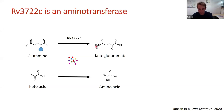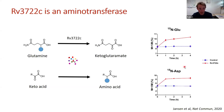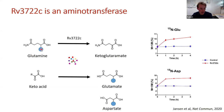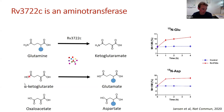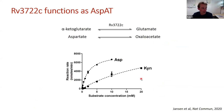We reasoned pool-size changes might be too small to detect, so we added an excess of 15N-labeled glutamine. This would push the reversible reaction forward and produce labeled amino acids that are easy to detect against the unlabeled pool. This worked well — we saw formation of 15N-labeled glutamate and 15N-labeled aspartate, confirming the amino group from glutamine transferred onto the carbon backbones of these keto acids.